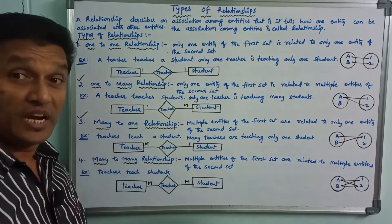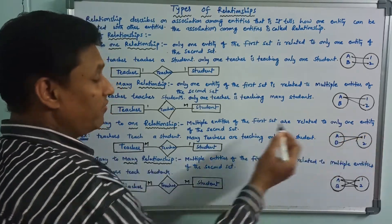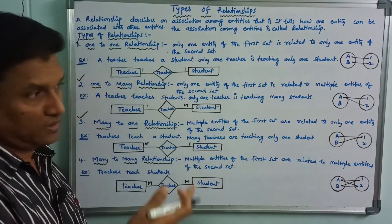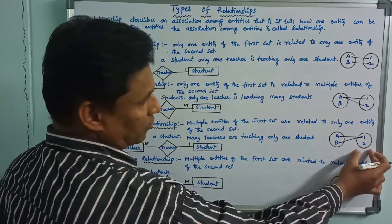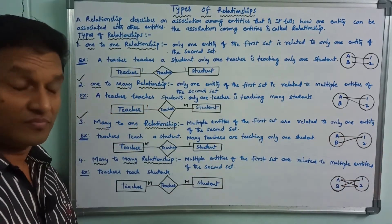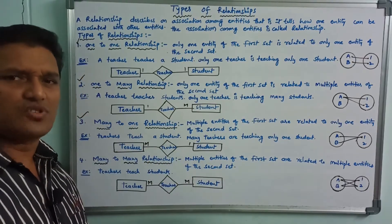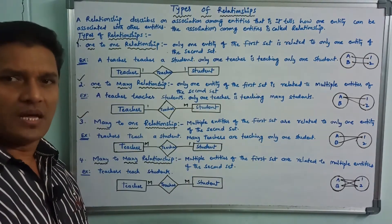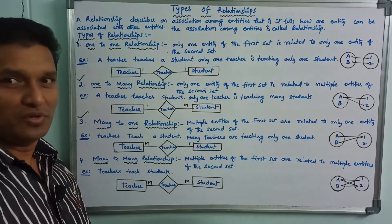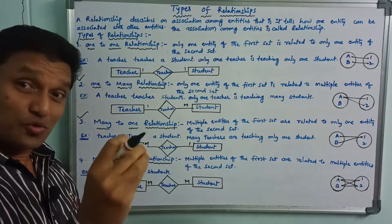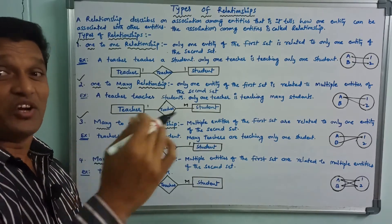That brings us to many-to-one relationship. Multiple entities of the first set are related to only one entity of the second set. Example: many teachers teach a single student. One student, but more than one teacher — for example, a Computer teacher, a Mathematics teacher, an English teacher, a Subject teacher — all teaching one single student. That is the many-to-one relationship.